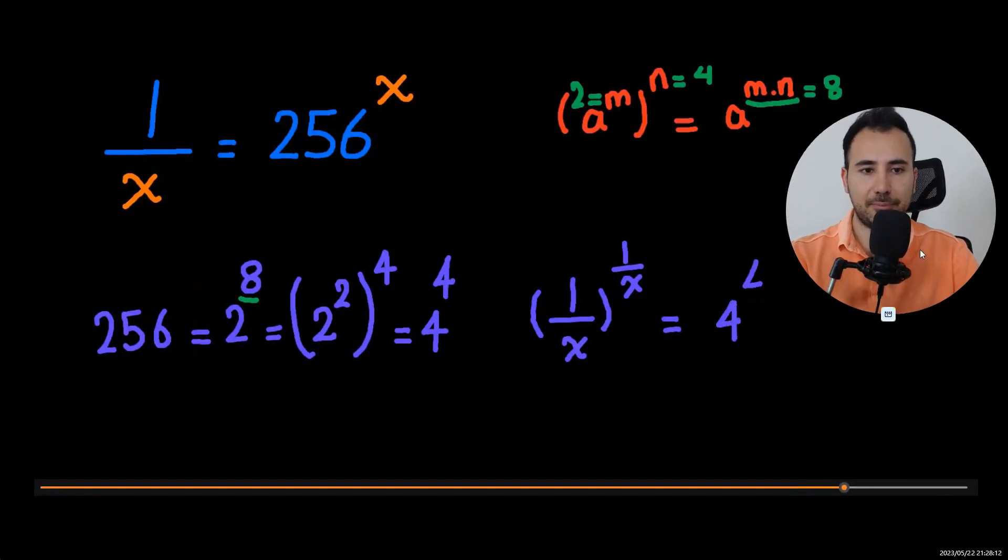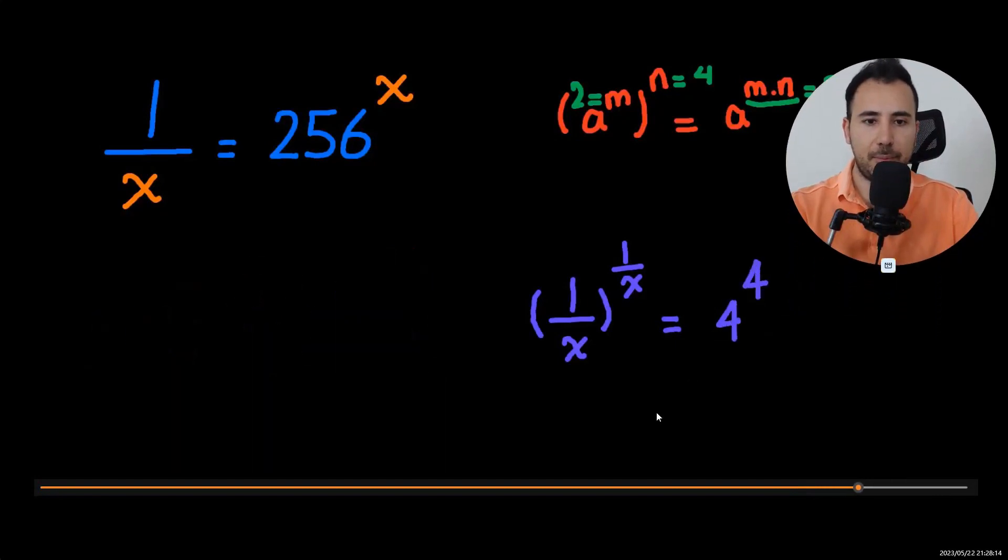Now, by comparison, you see that 1 over x has to be 4, and the equation is almost solved. So the value of x, the solution, is 1 over 4.